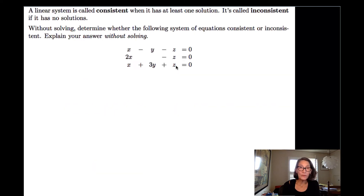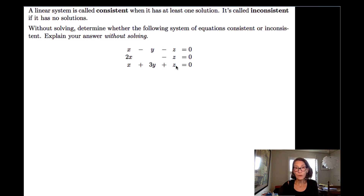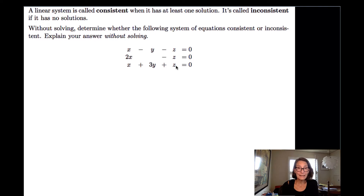Let's take a look at the system and a couple of definitions. A linear system is called consistent when it has at least one solution, and inconsistent if it has none. Any linear system of equations has one solution, infinitely many solutions, or no solutions. If it's one or infinitely many, we call it consistent. If it has no solutions, we call it inconsistent.